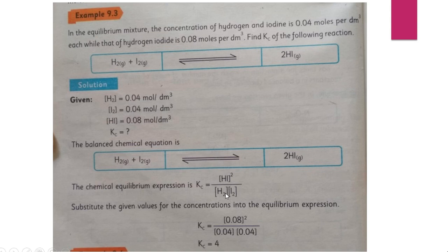Product of products by product of reactants. And the exponent will be raised to power. So HI raised to power 2 and for H2 and I2 that is 1. Substitute the given values for the concentrations into the equilibrium expression.